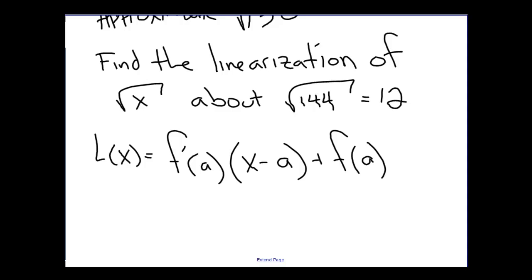Let's go ahead and start by finding the derivative of our function. Our function here is simply the square root of x, so we end up with 1 over 2 square root of x. That is our derivative.